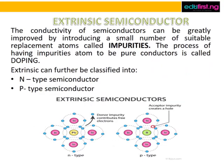Extrinsic semiconductors: the conductivity of semiconductors can be greatly improved by introducing a small number of suitable replacement atoms called impurities. The process of adding impurity atoms to a pure semiconductor is called doping. Extrinsic semiconductors can further be classified into n-type semiconductors and p-type semiconductors.